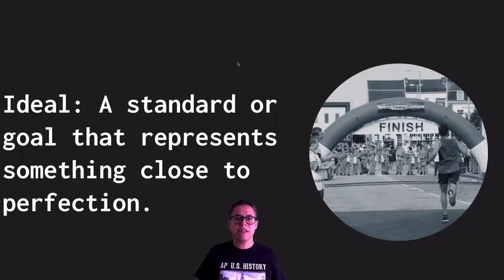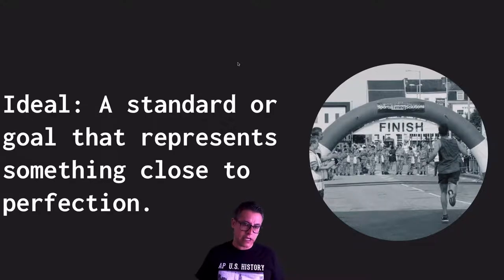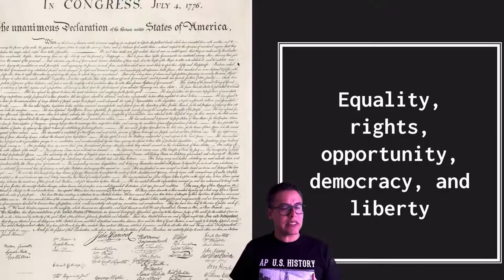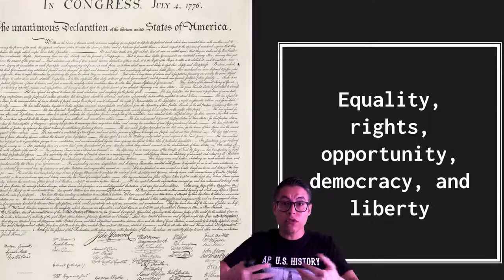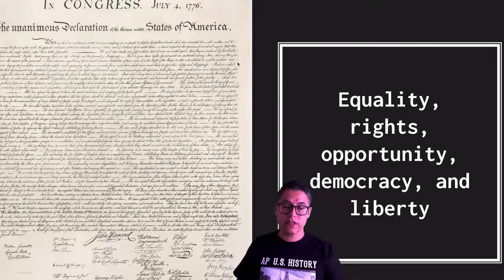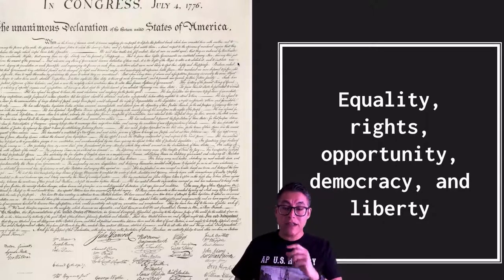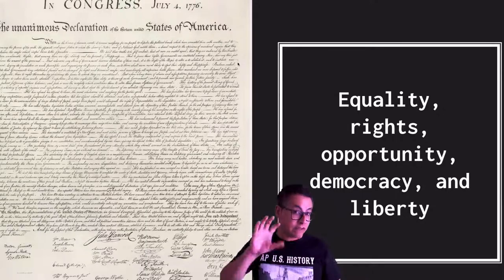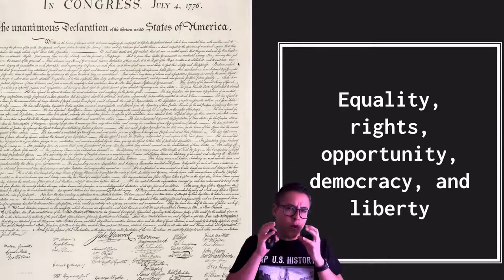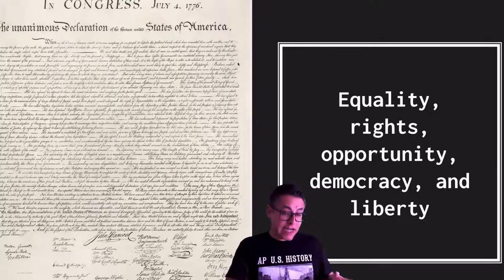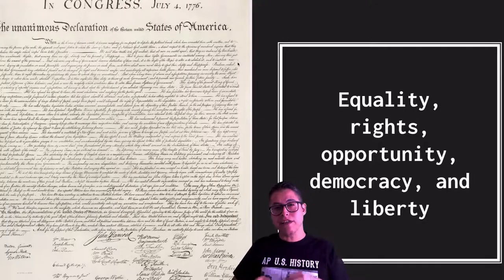In the Declaration of Independence there are five ideals enumerated in the first two sentences. Thomas Jefferson included these on purpose — I believe he was trying to set goals for what the country would be like once it was independent from Great Britain. The five ideals are: equality, rights, opportunity, democracy, and liberty. We're going to analyze how each was defined in 1776 and how it is debated today.